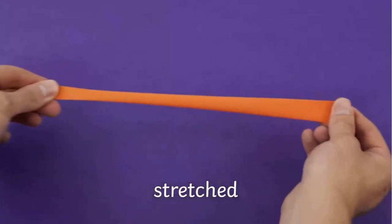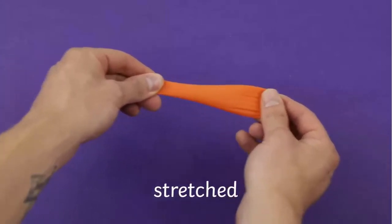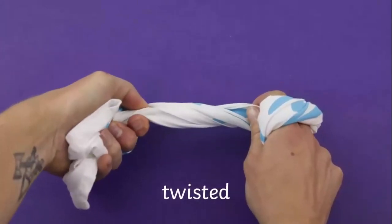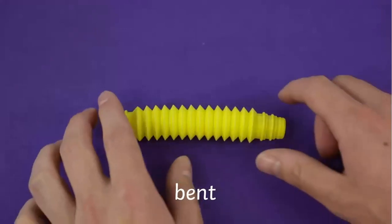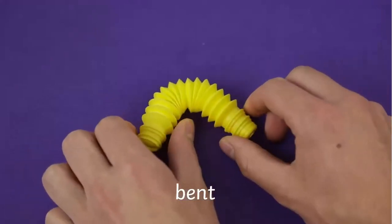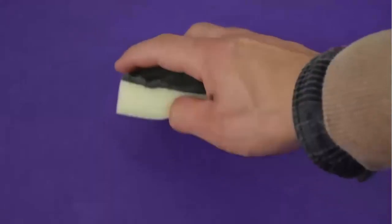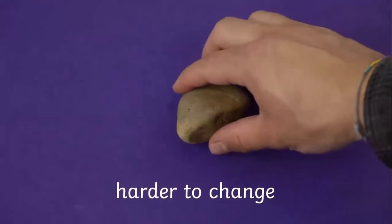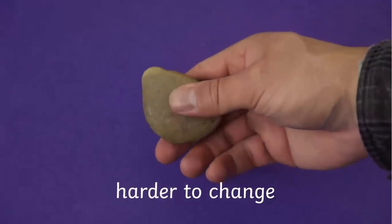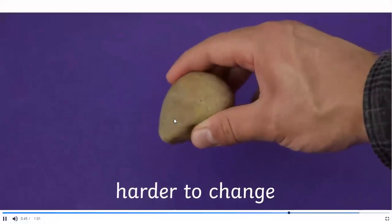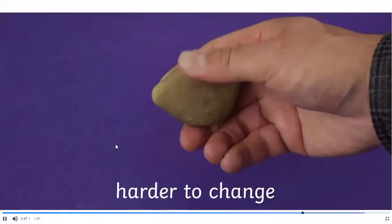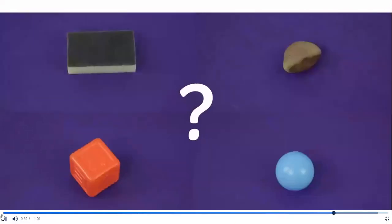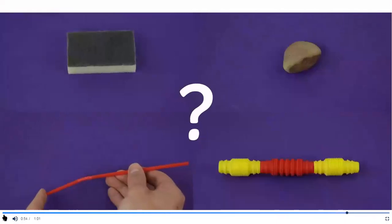Some materials can be stretched. Some materials can be twisted. Some materials can bend. And some materials can be squashed. But some materials are harder or even impossible to change. Can you investigate how to change the shape of different materials?